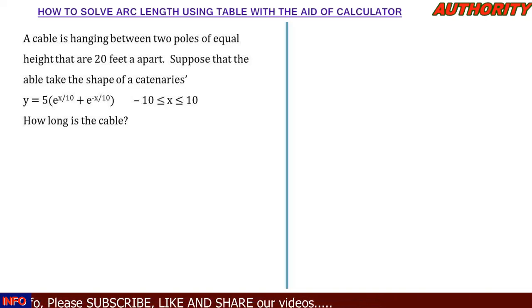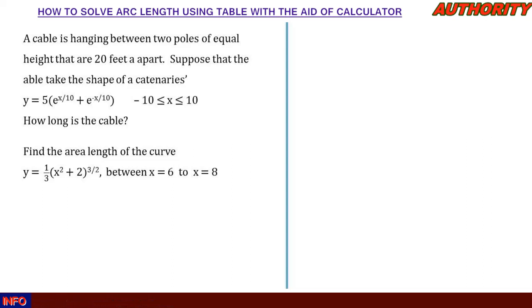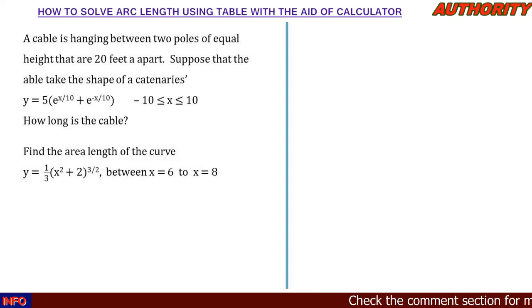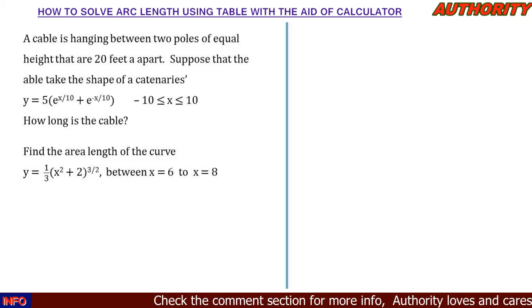Number two: find the arc length of the curve y = (1/3)(x² + 2)^(3/2) between x = 6 and x = 8. These are the questions from exercises. Let's see how we can use a table to solve them.